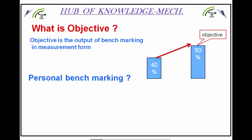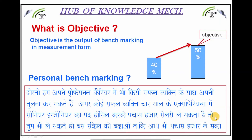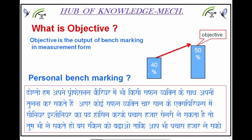We can also do personal benchmarking. In our professional career, we can compare ourselves with a successful person. For example, if a successful person, in 4 years of experience, has achieved the position of senior engineer and earns a 50,000 salary, then you can too — just increase your skills. This is an example of doing benchmarking to grow your personal skills. You can compare yourself with a skilled person who has surpassed you in less experience. Benchmarking can also be a method for setting smart goals.